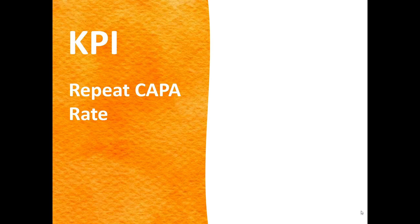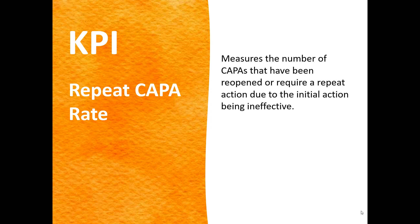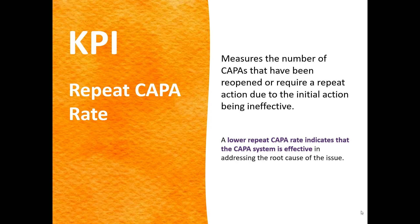You also need to track the repeat CAPA rate — this is a very important one. This measures whether CAPAs have been reopened or required a repeat action due to the initial action being ineffective. This is the case where you had a CAPA, worked on it, closed it out, and then the issue re-occurs — requiring you to reopen the CAPA or open a new one. A high number of repeat CAPAs means your CAPA system is not working. Did you not get to the root cause in the original CAPA? Were the fixes put in place not adequate? CAPAs cannot be closed until the effectiveness of the corrective actions has been monitored, so if you have to reopen a CAPA, something went wrong.